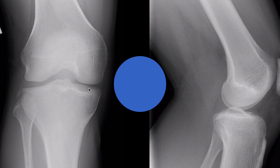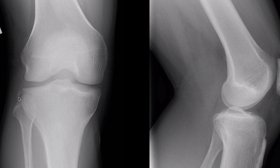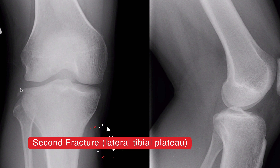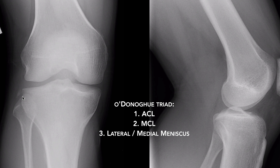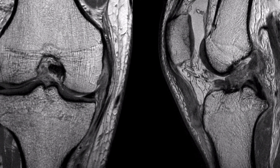In this case, if you follow the tibial plateau you can see a small chip off the bone of the lateral tibial plateau. This is characteristic and called the Segond fracture. This corresponds to where the lateral collateral ligament inserts on the tibial plateau, and is typically associated with ACL, MCL, and lateral meniscus injury - or sometimes medial meniscus injury - forming the O'Donoghue triad. On MRI, you can see the avulsed bone fragment from the lateral tibial plateau and the ACL disruption, along with significant knee joint effusion.